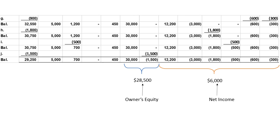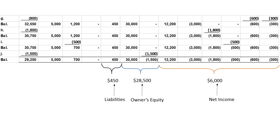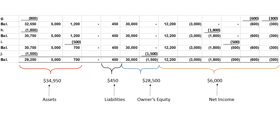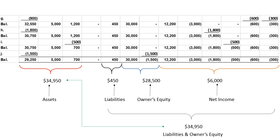Then we have owner's equity, which is the capital account and the drawing account. The net capital contributed minus capital withdrawn is $28,500. And the liabilities total $450. Adding up all the assets gives $34,950, and sure enough, liabilities plus owner's equity also equals $34,950 — the equation balances.